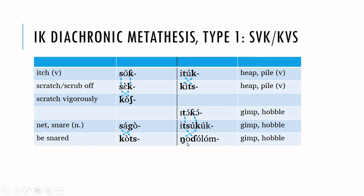In this last set, each token has the meaning 'to gimp or hobble.' Itoko, itzukuk, and ngodolom. I hypothesize that this last form has been inverted at some point and in some language. My overall question, which I do not have an answer to, is how does Eek and any other language come by sets like this?